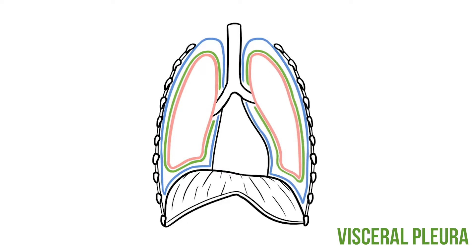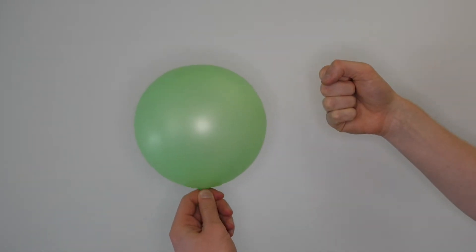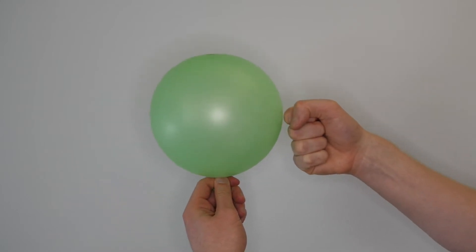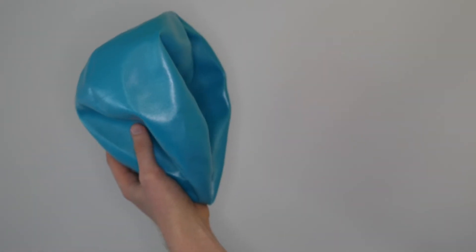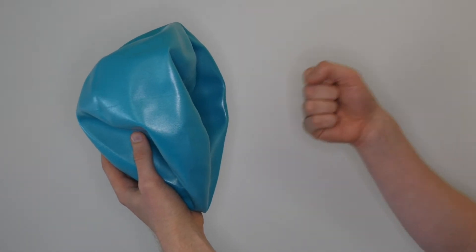Although we talk about visceral and parietal as being separate layers, they're actually continuous with one another. As the visceral pleura reaches the hilum of the lung, it folds back on itself to become parietal. If you're struggling to visualise this, think of the lungs sitting inside the membrane like a fist pushed into a balloon — I actually tried this and it didn't go so well, but a half-inflated exercise ball seemed to do the trick.